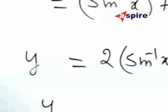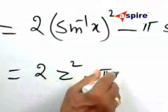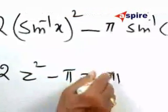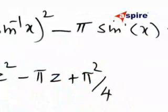For the sake of simplicity, I will call this equal to 2z squared minus π z plus π squared by 4. We will try to get the minimum value of this.